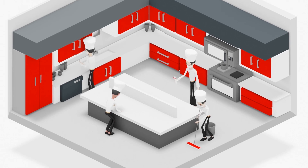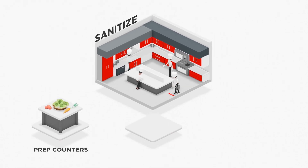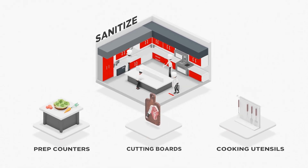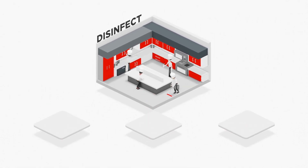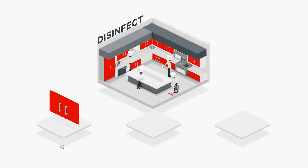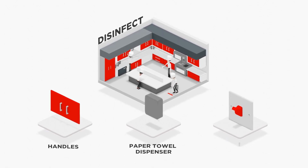In the kitchen, key areas to sanitize include things like prep counters, cutting boards, and cooking utensils, while disinfectants should be used on the non-food contact surfaces like handles, paper towel dispensers, and light switches.